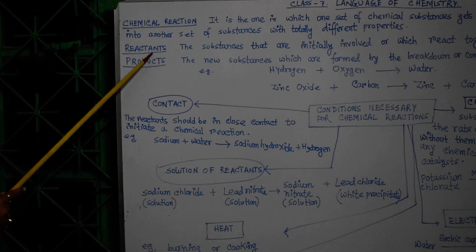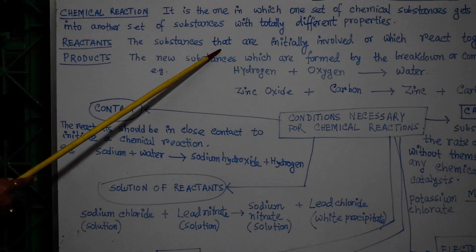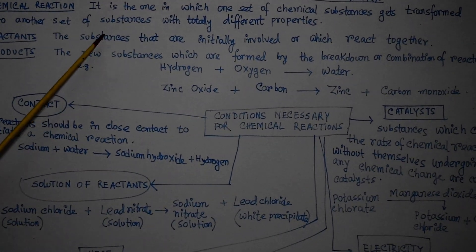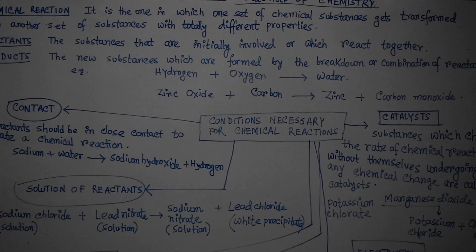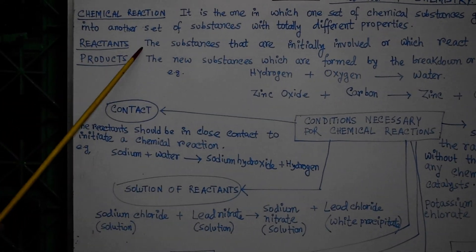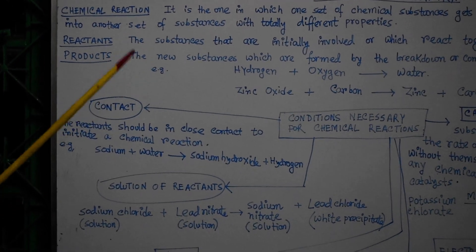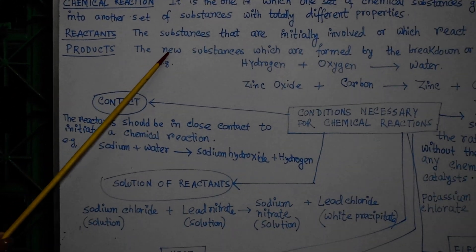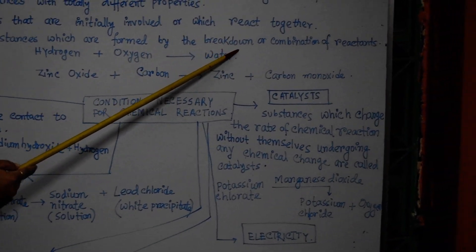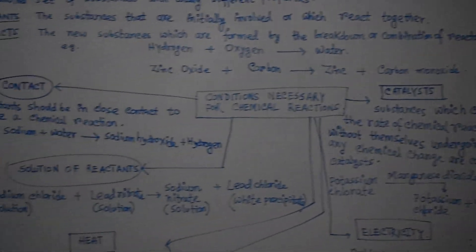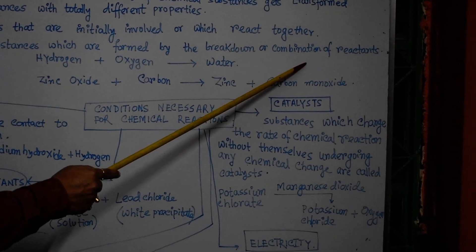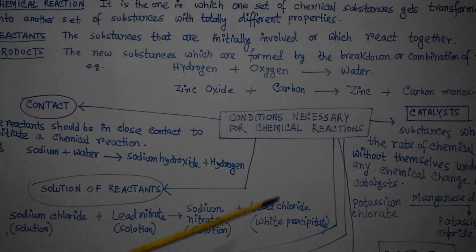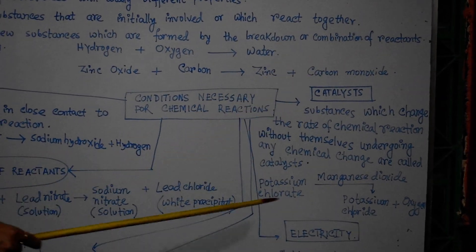In chemical reactions, there are two parts: reactants and products. Reactants are the substances that are initially involved — they react together to initiate the chemical changes. Products are the new substances formed by the breakdown or combination of reactants. Reactants can be broken down into simpler parts or combine directly to produce a new set of products.